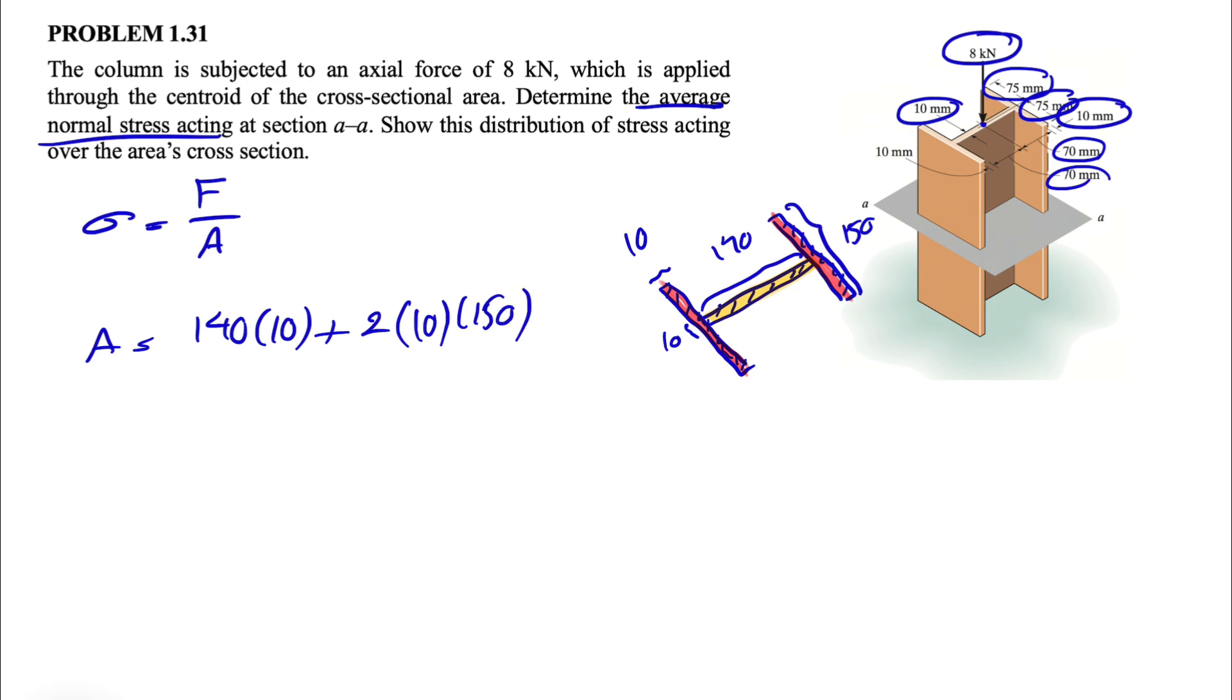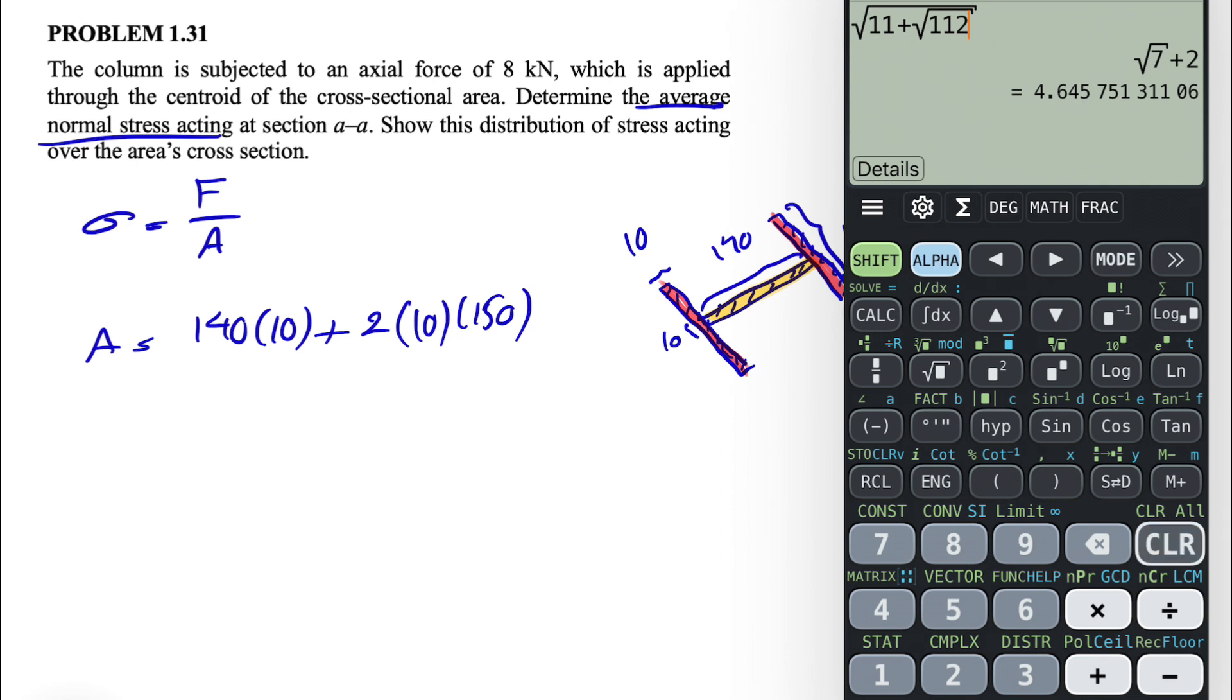And that's going to give us the area based on millimeters. So let's just calculate this, basically 1400 plus 3000, which is going to be 4400 millimeters squared, or 4400 times 10 to the minus 6 meters squared.